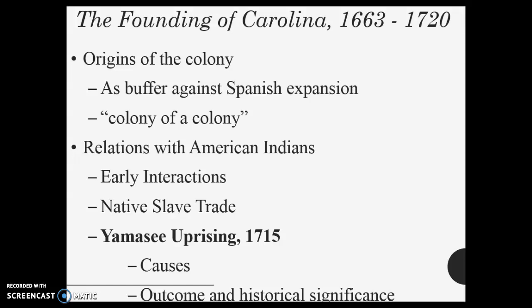Very important here: unlike the Spanish, who wanted gold, to convert the Indians, and to control their labor, the English want land. England is small and had an excess population. Its goal was to uproot and move the natives — didn't always intend to kill them, but to get rid of them one way or another so they could take the land. That's why they sell them off into slavery somewhere else.